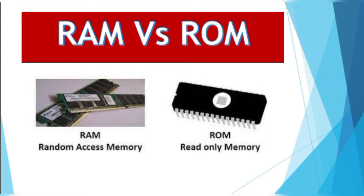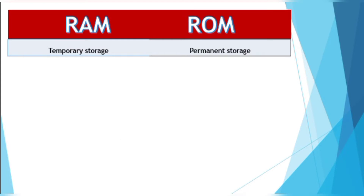In ROM we can just read it. After writing it, we can't edit it — only read it. And in RAM we can read it and write it. For RAM, it is temporary storage, and ROM is permanent storage.